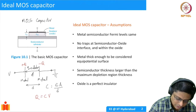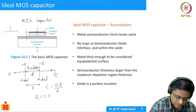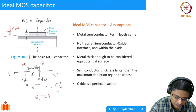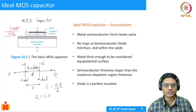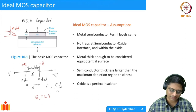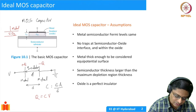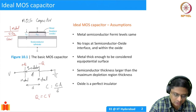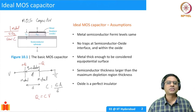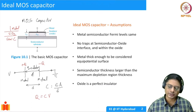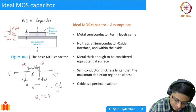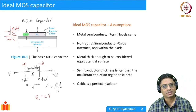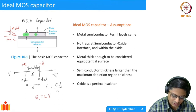You have the top plate which is metal, then a separated insulator — SiO2, silicon dioxide — and then the second terminal or plate is a semiconductor. That is why the name MOS capacitor. One of the crucial parameters is the thickness of the oxide, Tox, and the permittivity of the oxide, epsilon-oxide.